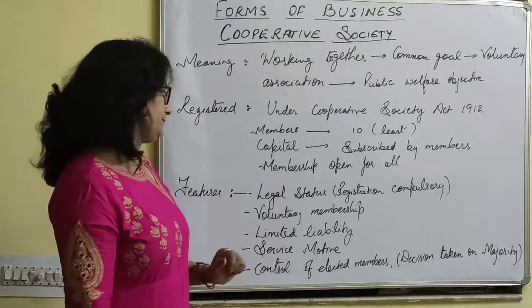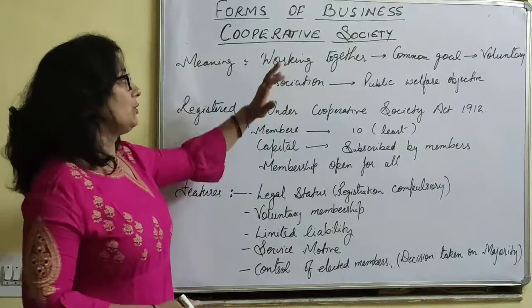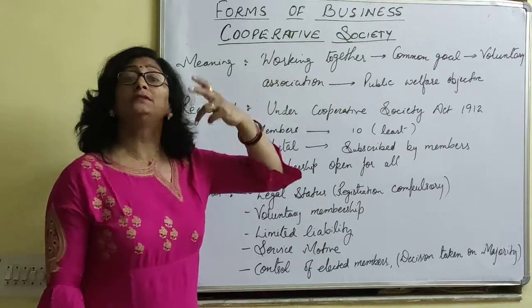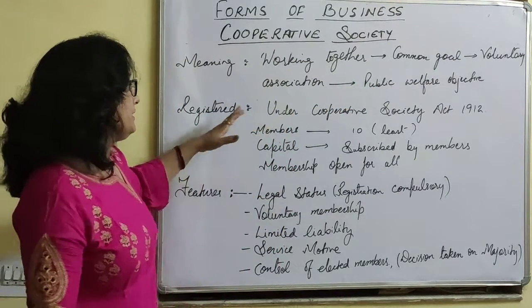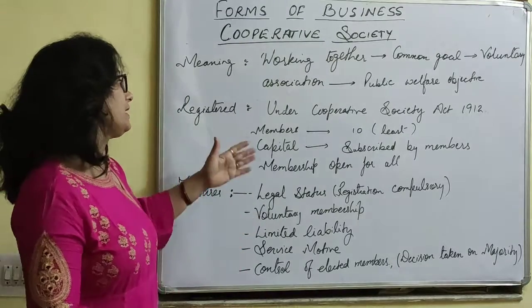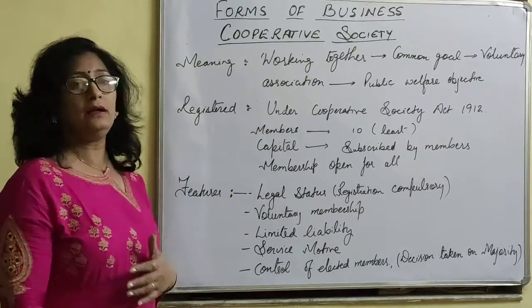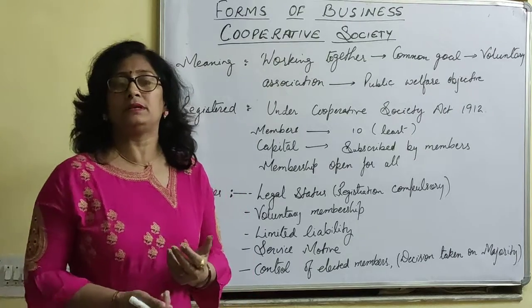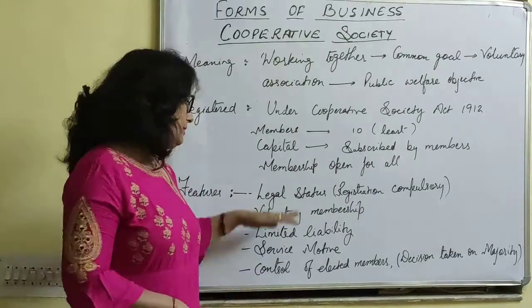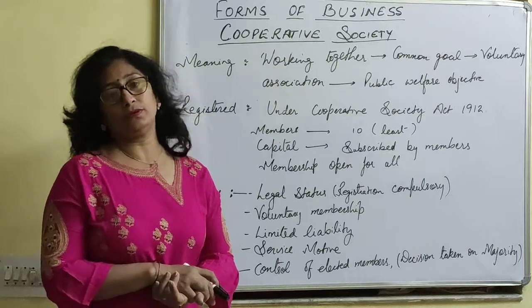So I think you have understood what cooperative society is — how it is established, what its objective and motive are, how capital subscription works, how many members are required, what the basic features are, how they run the business, and what their liabilities are, including limited liability.